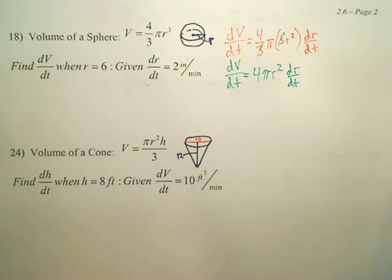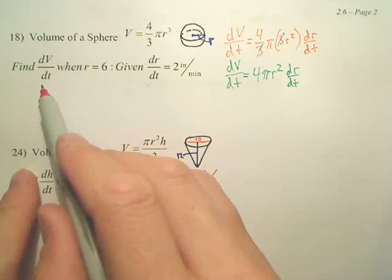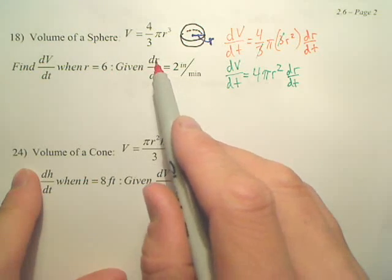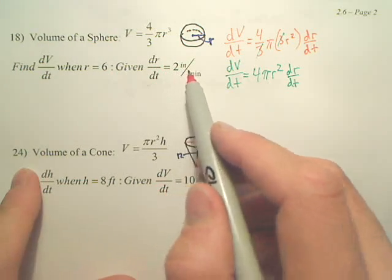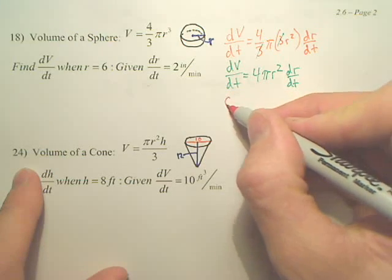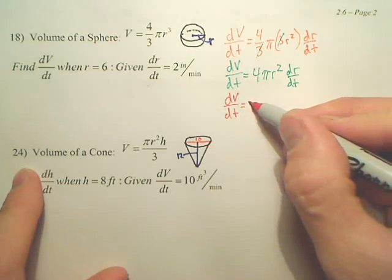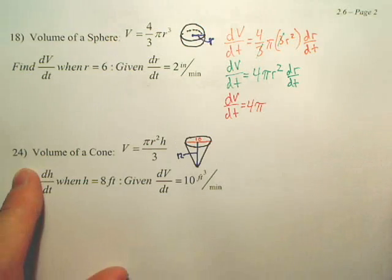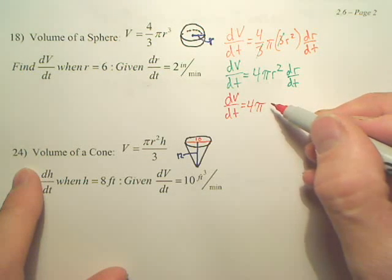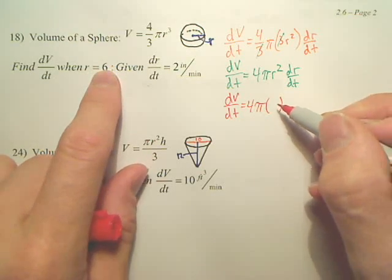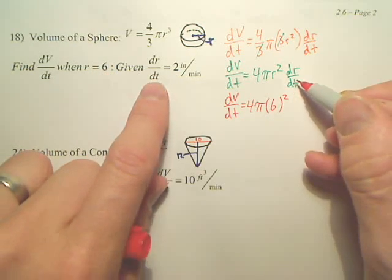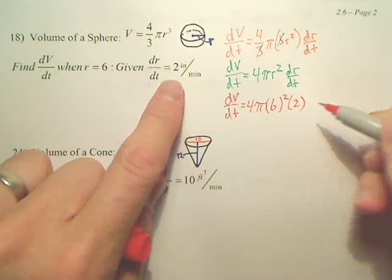The question is asking, once again, find dV/dt when r is 6 and the change of rate of the radius is 2. So we want dV/dt. This is still 4. Pi is pi. It doesn't change. It's always pi, a certain number. What's r? r was 6. And what's dr/dt? It's 2.